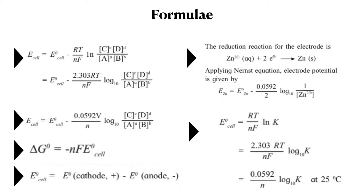The formula becomes E-cell equal to E-naught-cell minus 2.303RT upon NF, log base 10 of concentration of products upon concentration of reactants. At 25 degrees Celsius, 2.303RT upon F can be replaced by 0.0592, so the formula becomes E-cell equal to E-naught-cell minus 0.0592 upon N, log base 10 of concentration of products upon reactants. Delta G-naught equals negative N times F times E-naught-cell, where delta G-naught is standard Gibbs free energy, N is number of electrons, F is Faraday's constant, and E-naught-cell is the standard cell potential.